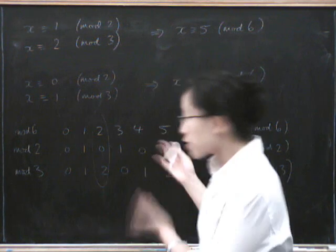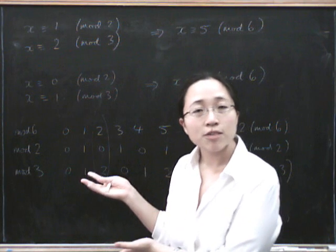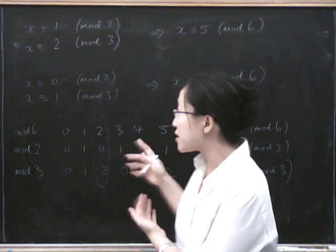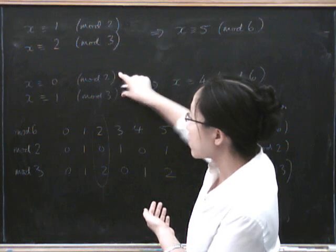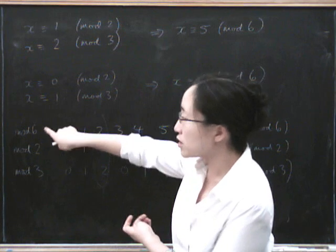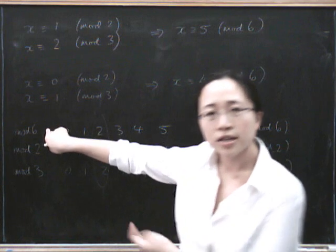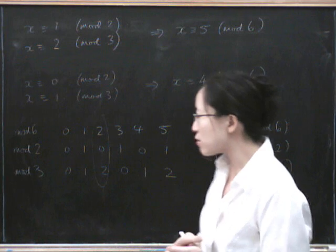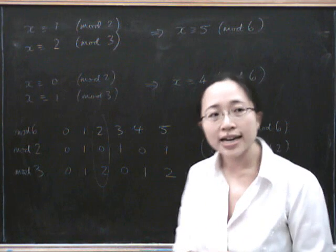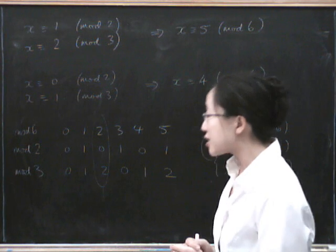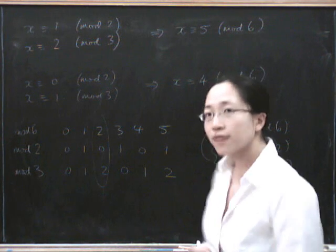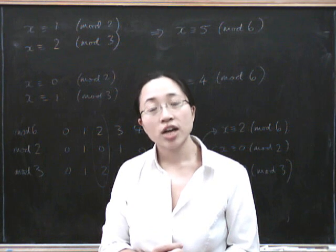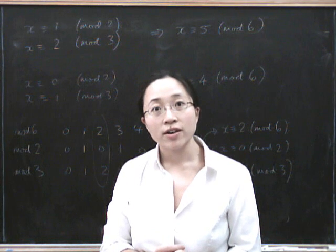So that's quite a pretty pattern. I hope you can try investigating it with different numbers. I've done it mod 2 and 3 to give 2 times 3 equals 6. Try doing it with some other numbers to see if it still works. And later on we'll see that this is an example of something called, curiously, the Chinese remainder theorem.